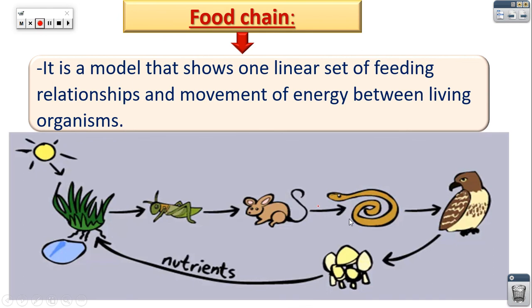The food chain is a model that shows one line of feeding relationships between living organisms and also shows the flow of energy. The food chain shows us one line of feeding relationship, meaning it allows us to know what each animal feeds on. It shows just one line — for example, it shows that the hawk only eats the snake, but actually the hawk does not only eat the snake. The food chain shows one line of feeding relationship and the energy flow between living organisms.